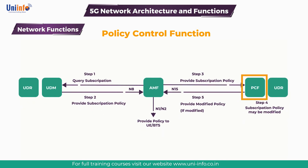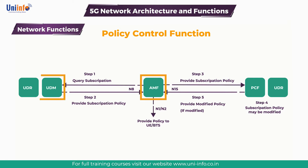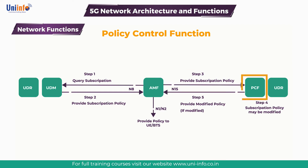PCF was called PCRF in 4G. The general pattern of interaction between the AMF, UDM and PCF is illustrated in the figure on the screen. The AMF obtains subscription information from the UDM. The UDM may store this information locally or may need to retrieve it from the UDR. The AMF subsequently provides the subscription information to the PCF, which stores it either locally or using the UDR. The PCF may then decide to modify the subscribed policy information according to the operator policies.